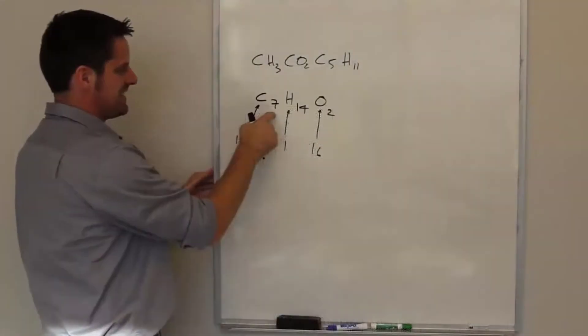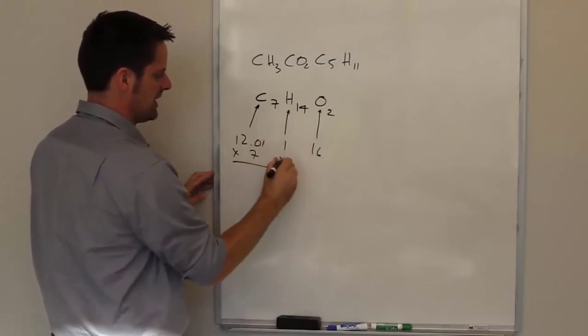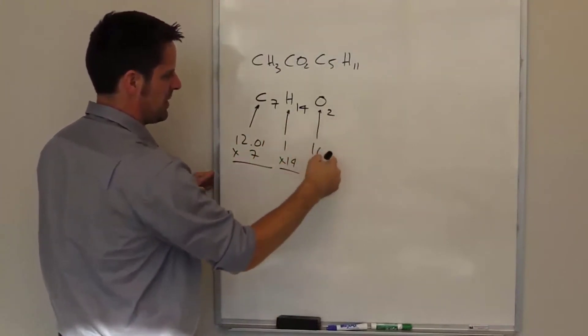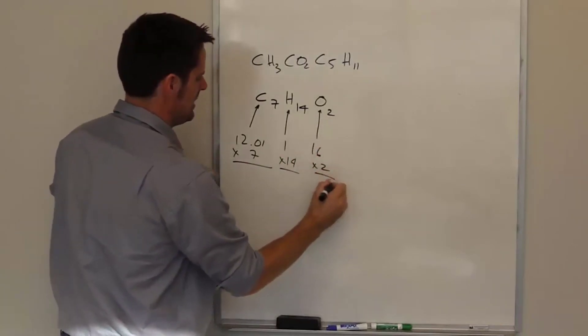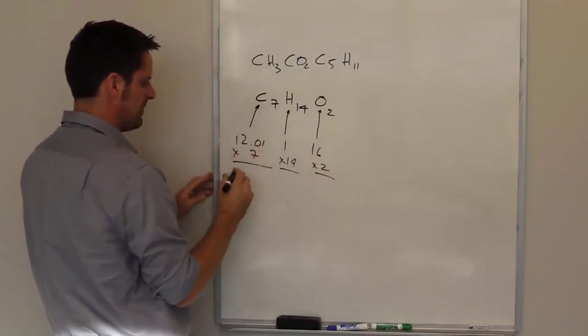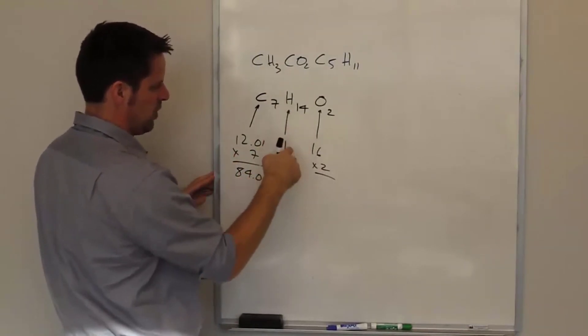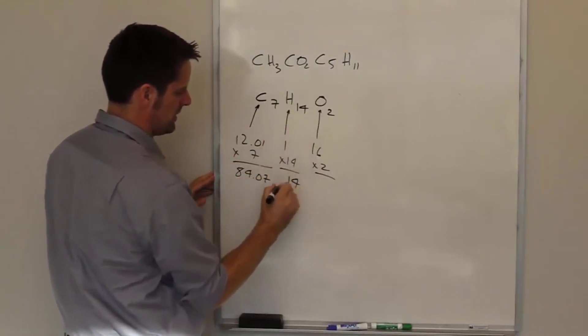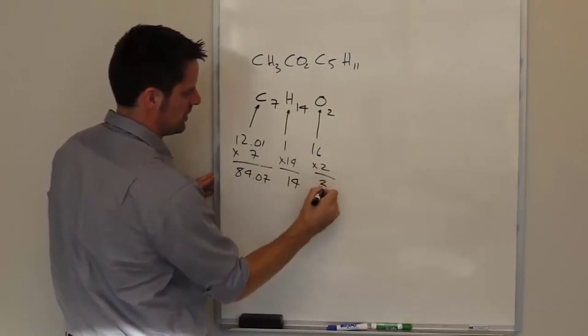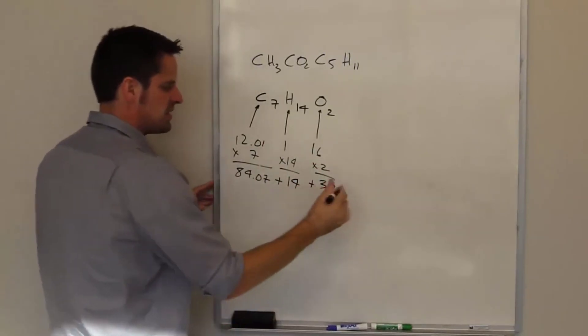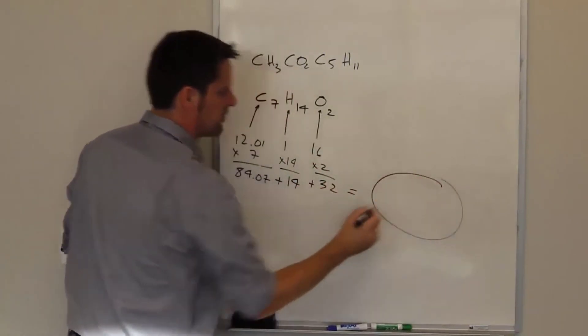Now I've got seven carbon atoms, 14 hydrogens, and two oxygens. So if I take this, multiply it by seven, that gives me 84.07. If I take one times 14, that gives me 14. And if I take 16 times two, it gives me 32. If I add these together, I'll get the final molecular weight for this compound.